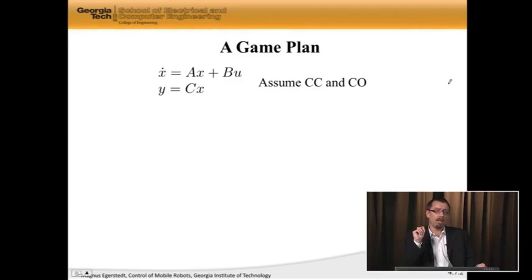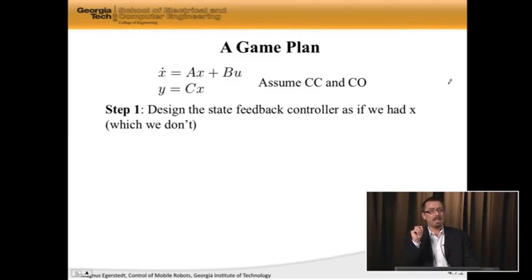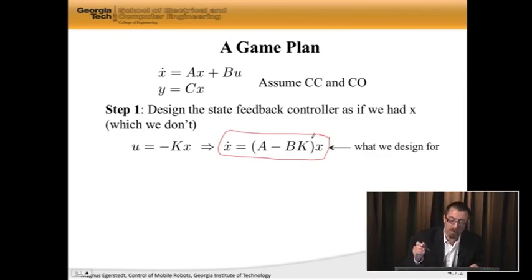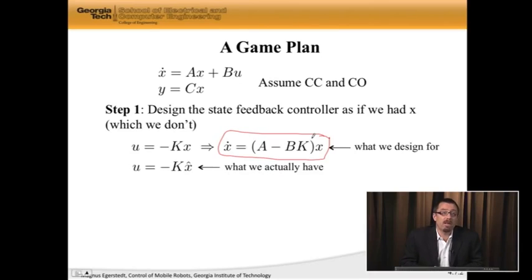The first step in our game plan is, let's ignore the fact that we don't have x. I'm going to design the state feedback controller as if I had x. Meaning, I'm going to pick u is minus Kx, which means that I get my closed loop dynamics to be this. This is what I designed for, and I have my favorite pole placement tool to do this. Now, in reality, I don't have that. In reality, I have u is minus K x hat, where the hat is my estimated state. So that's what I actually have, even though that's not what I designed for.